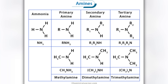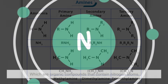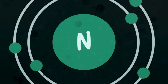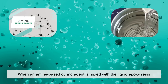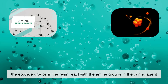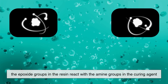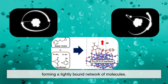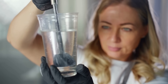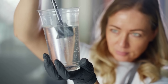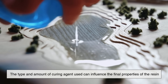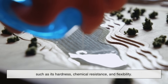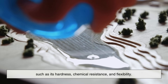One of the most commonly used curing agents is amines, which are organic compounds that contain nitrogen atoms. When an amine-based curing agent is mixed with a liquid epoxy resin, the epoxide groups in the resin react with the amine groups in the curing agent, forming a tightly bound network of molecules. This cross-linking process is what gives epoxy resin its unique strength, durability, and resistance to wear and tear. The type and amount of curing agent used can influence the final properties of the resin, such as its hardness, chemical resistance, and flexibility.